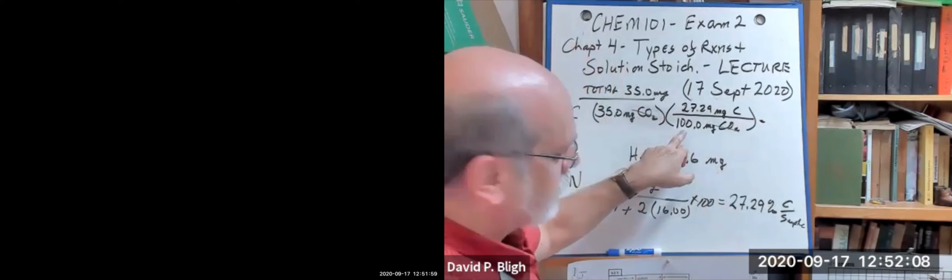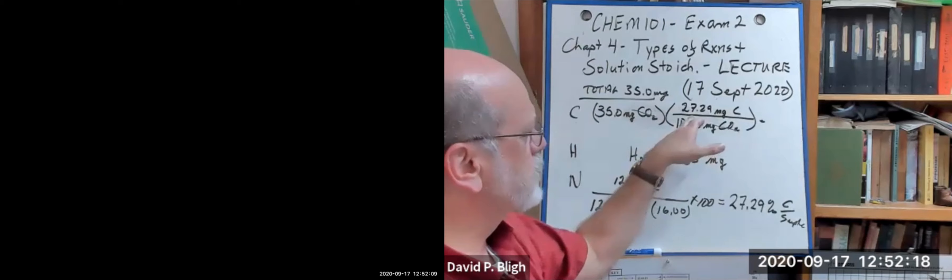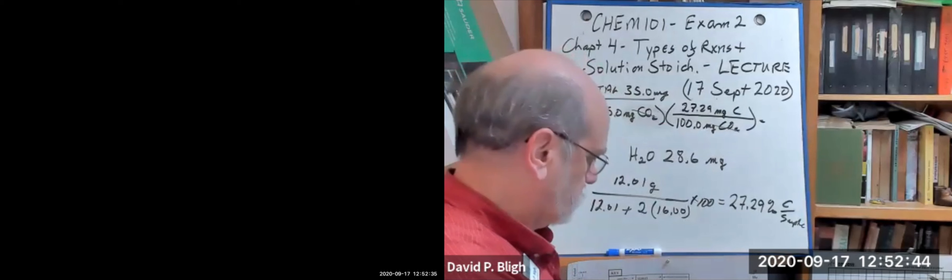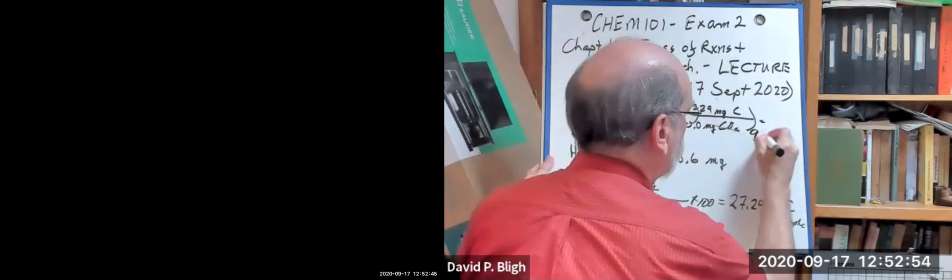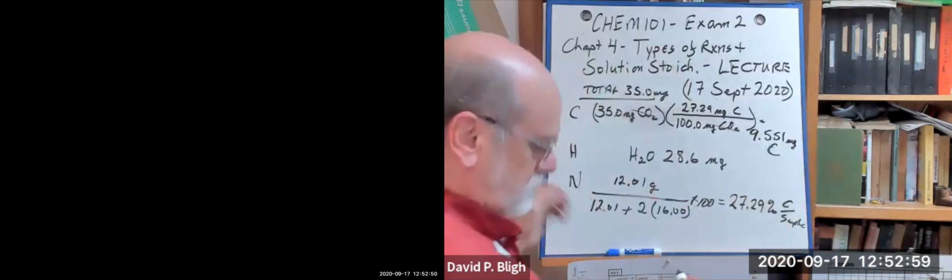That's what that means — parts per hundred. So that cancels the milligrams. You divide by 100 and multiply by 27.29. What I was going to do was change this to the fractional equivalent, 0.2729, and multiply times 35 to get the same result. This shows you the dimensional analysis aspect of the calculation. So if we do that — times 35 — we get 9.551 milligrams of carbon in that sample.